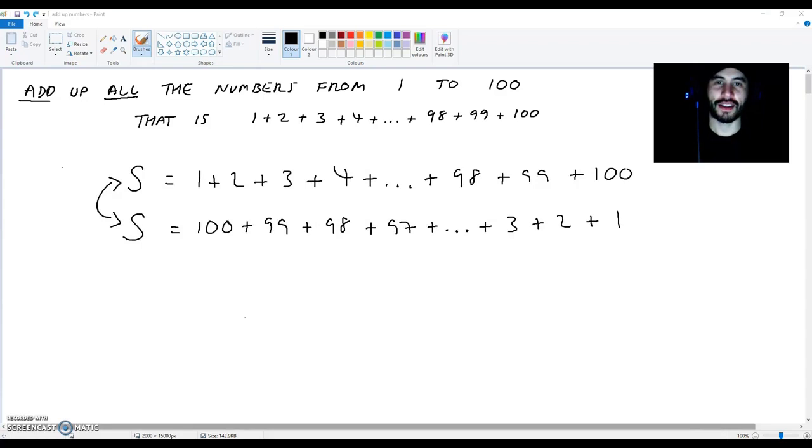Now, what I want you to do is add up both of these sums. The normal one and also the one in reverse. So, write down 2S over here. And this is going to be equal to... Check this out.